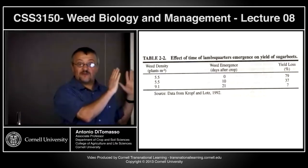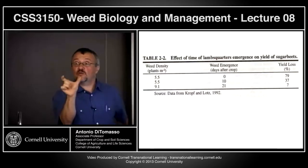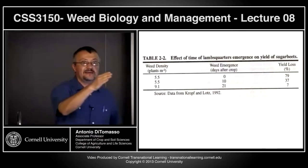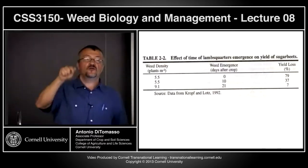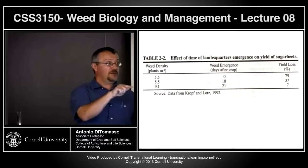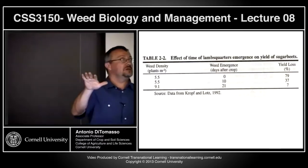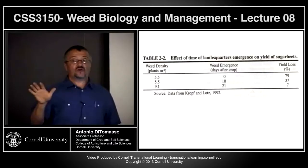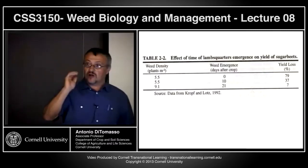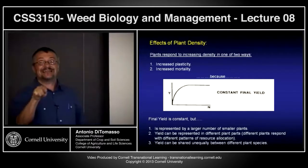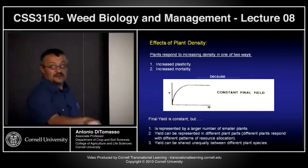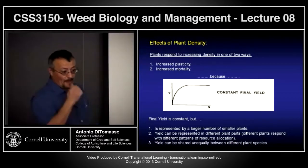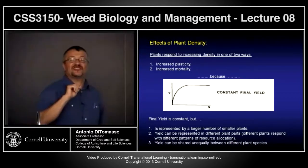The period during which the crop must be weed-free is called the weed-free period, and the period during which competition causes yield loss is the critical period of competition. The overlap between these two periods gives you what is referred to as the critical period of competition — a window, usually defined by crop growth stage such as the 8-leaf to 15-leaf stage, when the grower must get in and use whatever control method is appropriate.